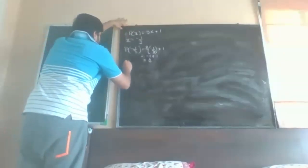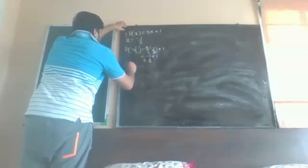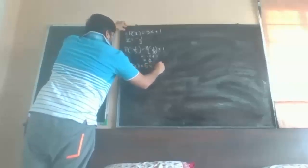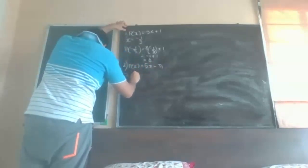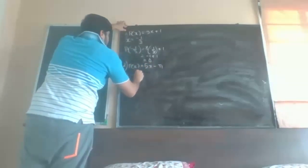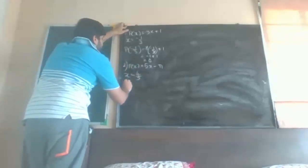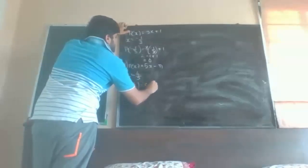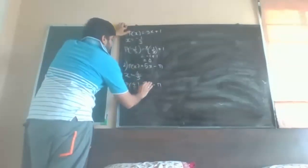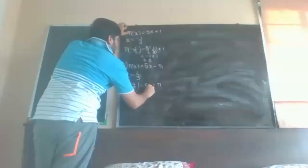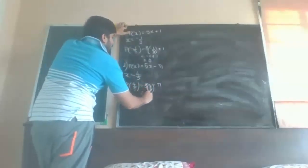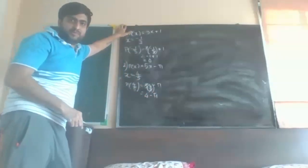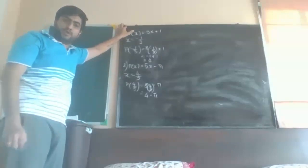Second sum: p(x) = 5x − 5 and x value is given as 4 by 5. So p(4/5) = 5 into 4 by 5 minus 5. The 5 gets cancelled, giving 4 minus 5. Is your answer coming 0? No, then it is not a zero of a polynomial.